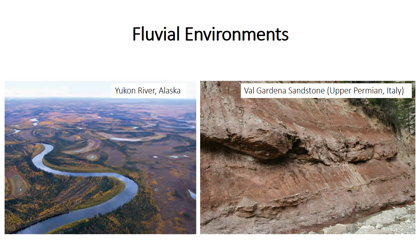We'll start this course by considering fluvial, or river environments, because you're probably at least somewhat familiar with rivers and how they work. Our ultimate goal is to use the characteristics you can see in sedimentary rocks, like the Permian rocks from Italy in the right-hand photo, to infer their original depositional environment. That requires an understanding of the processes that operate in modern environments, especially the movement and deposition of sediment, and how those processes lead to the formation of diagnostic sedimentary features.